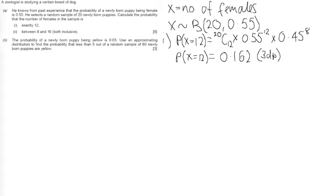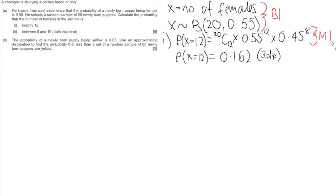Where can we get marks on this question? We get a statement mark for stating our binomial distribution correctly. We then get a method mark for showing how we've used the binomial formula, and then an accuracy mark for the answer stated to three decimal places.